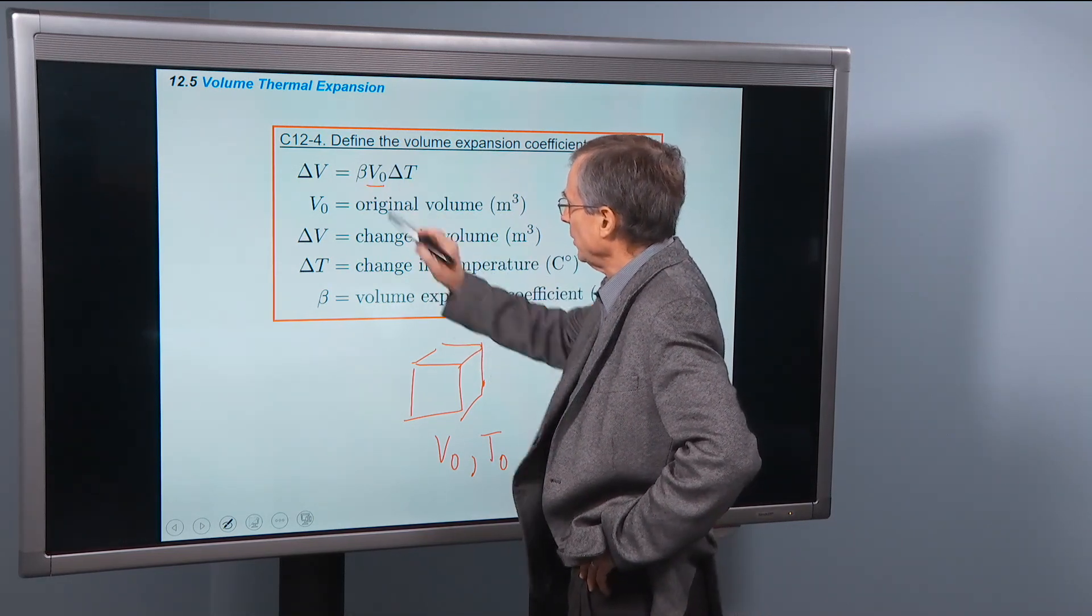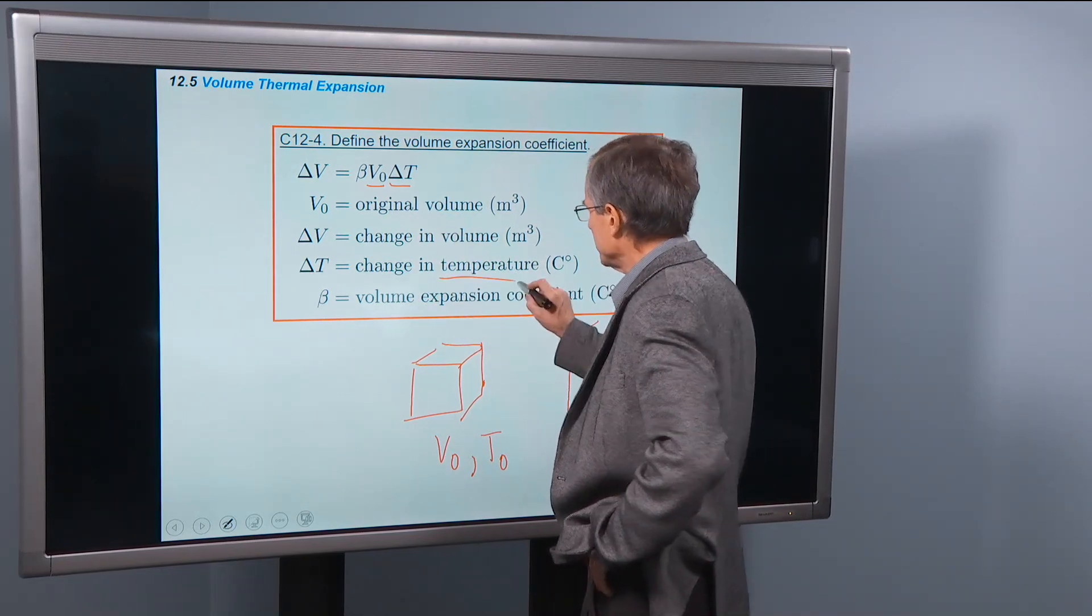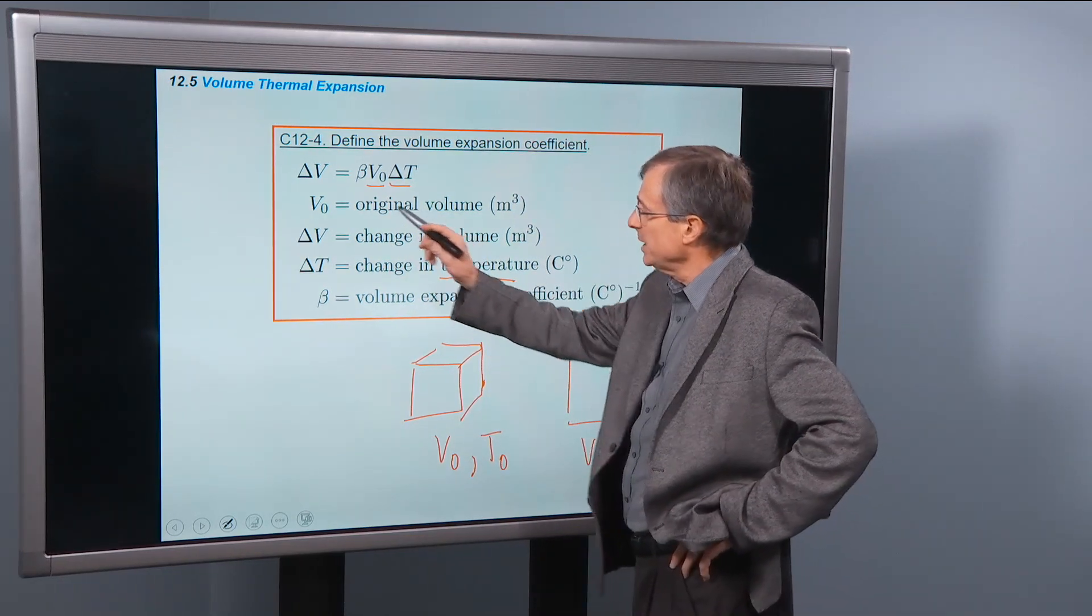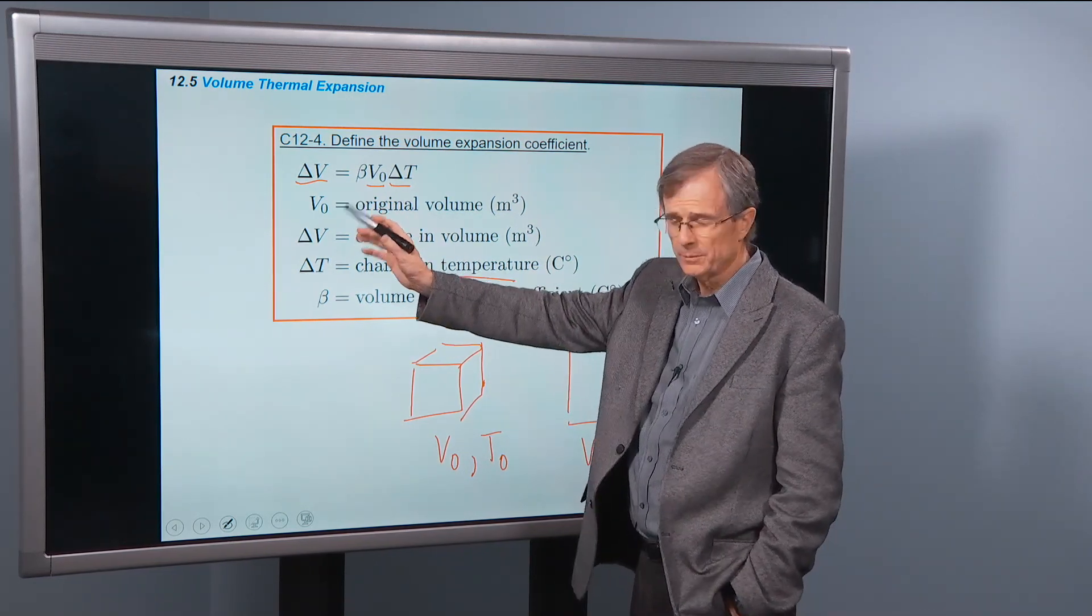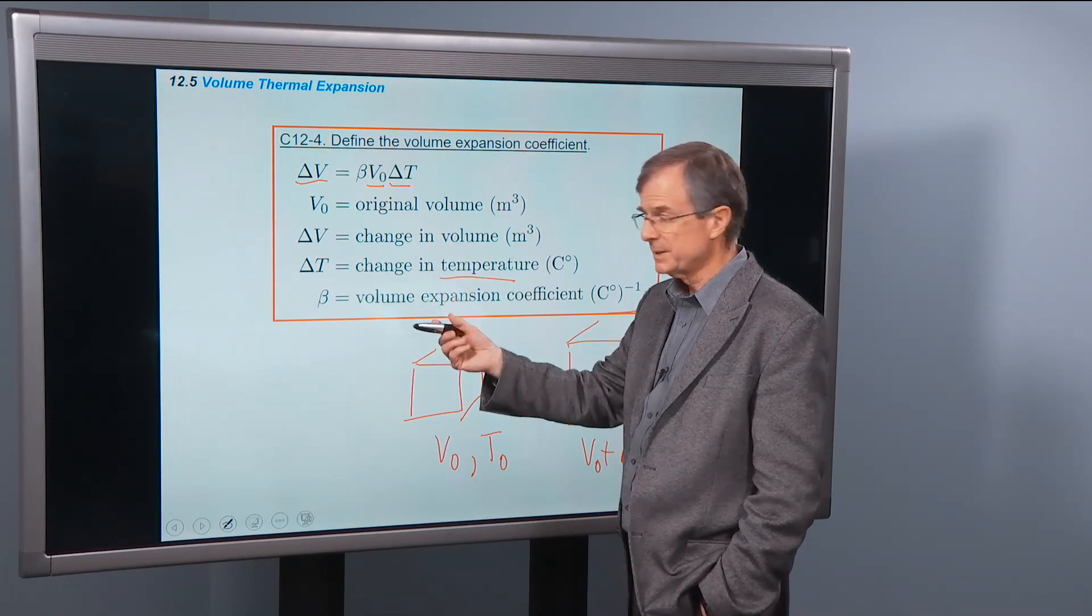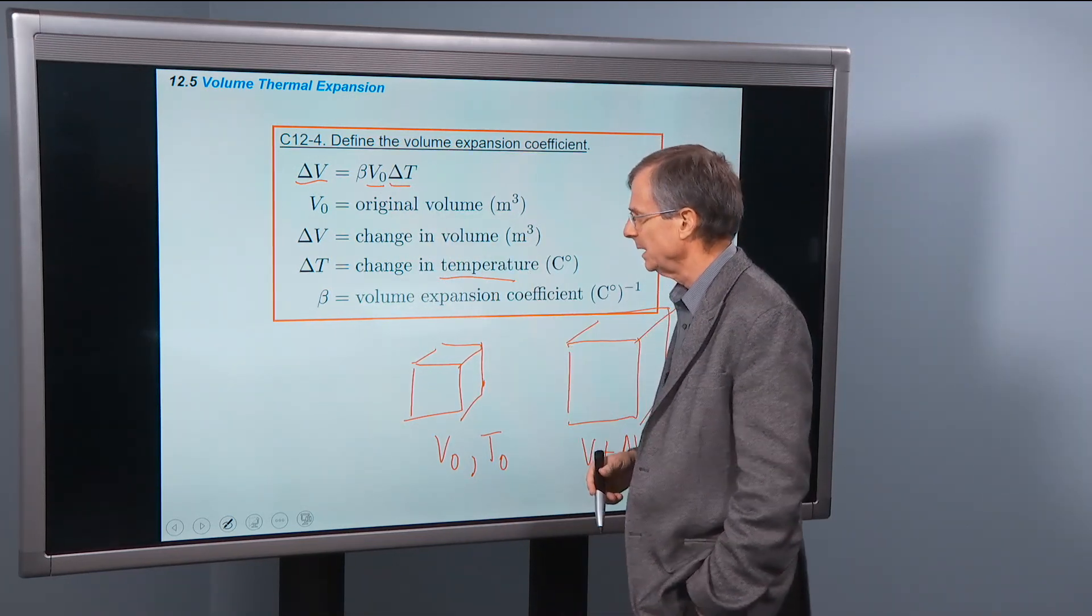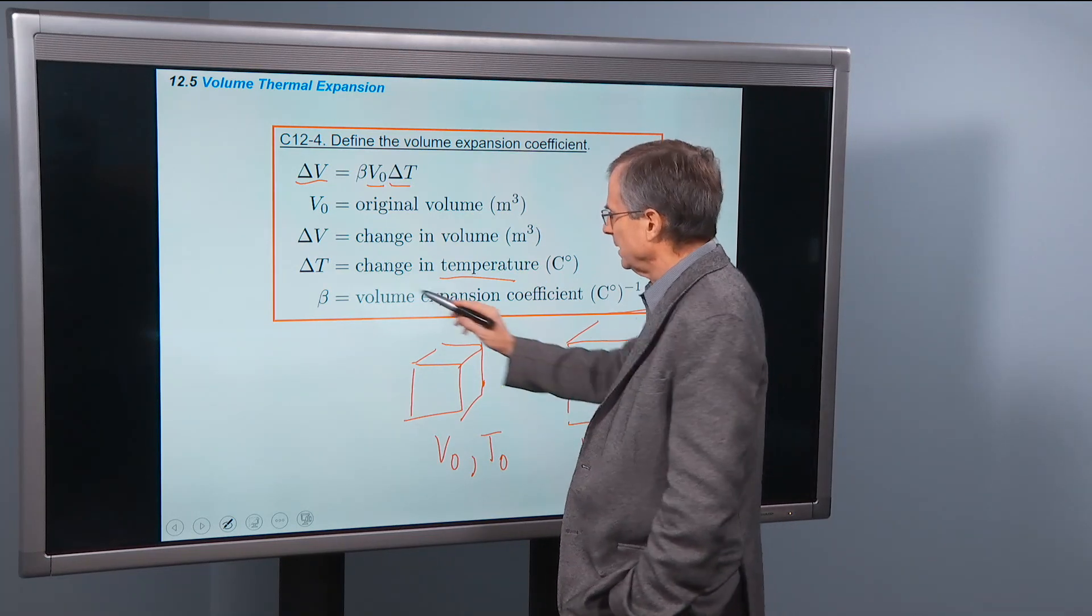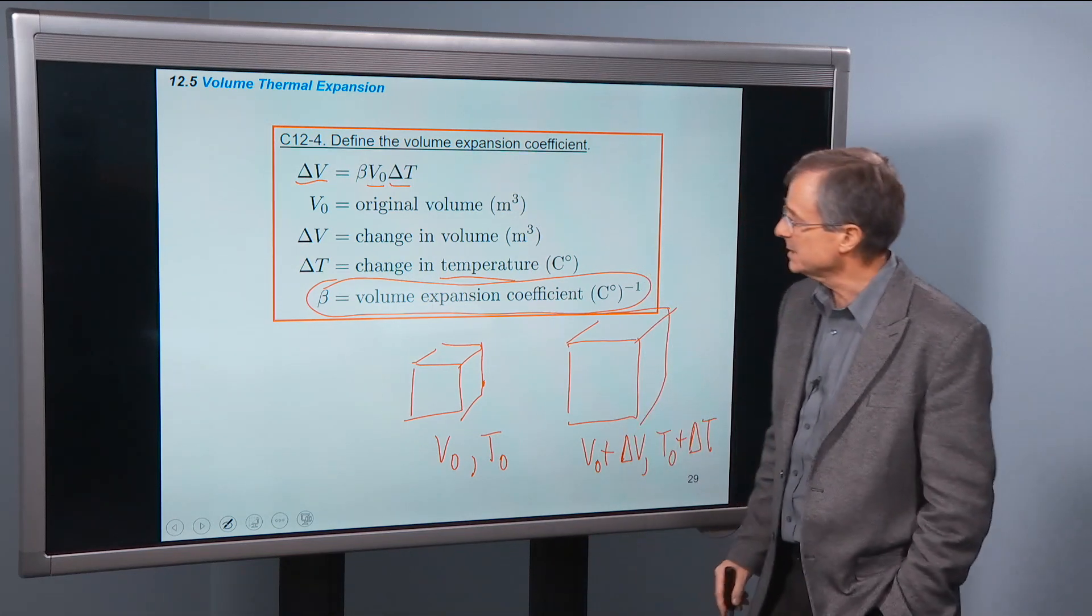You've got the original volume, the change in the temperature, the change in the volume. It looks just the same. Delta L is alpha L0 delta T. And here we've got delta V is beta V0 times delta T. And beta is this volume expansion coefficient, also measured in inverse degrees C.